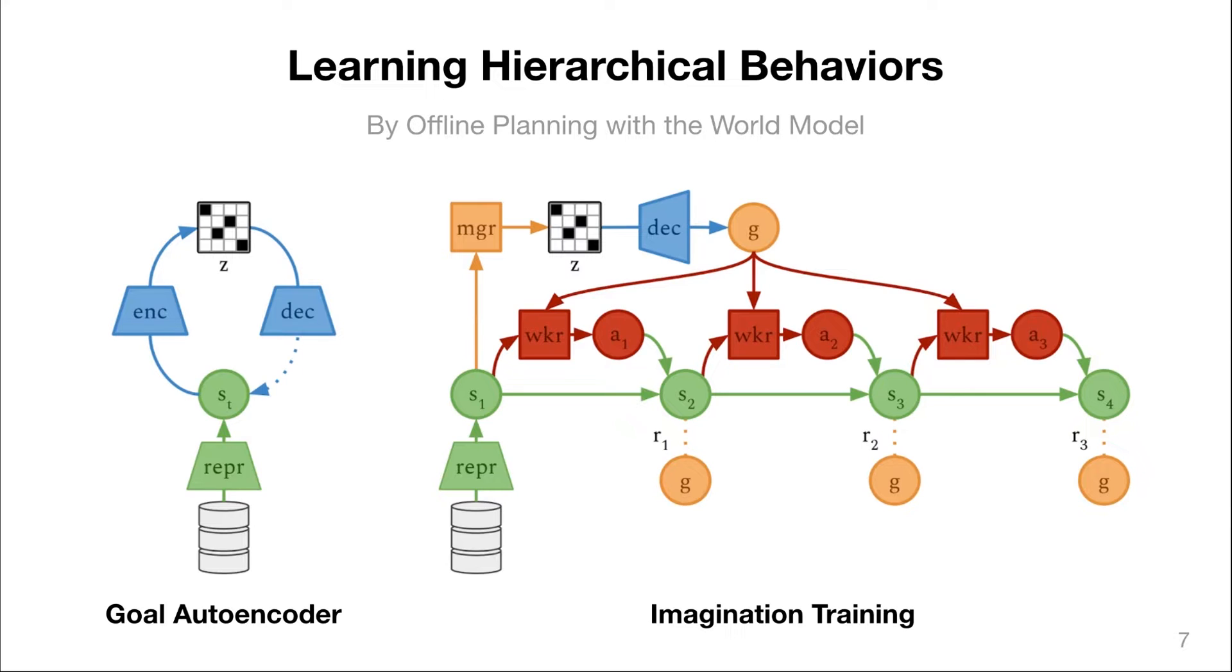The worker policy then simply receives the current state and the current goal and produces primitive actions to get as close to the goal as possible as measured by a simple feature space distance. The low-level policy does not receive any task reward or exploration reward to show that the hierarchical mechanism really works.